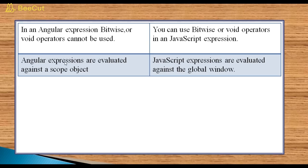Angular expressions are evaluated against a scope object. JavaScript expressions are evaluated against the global window.